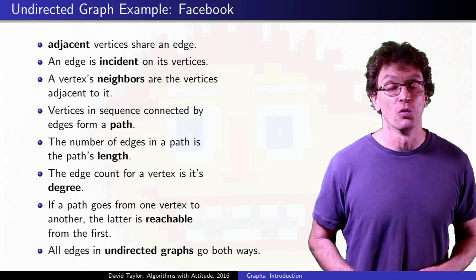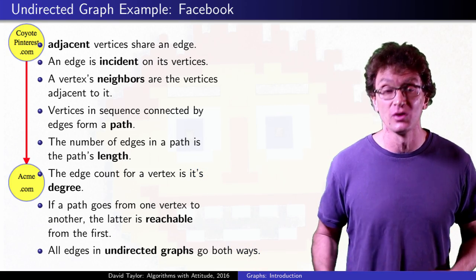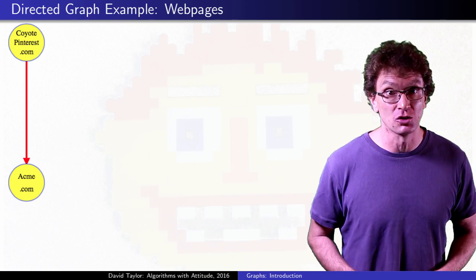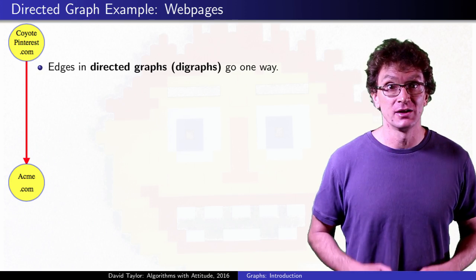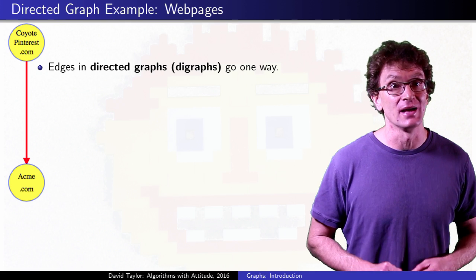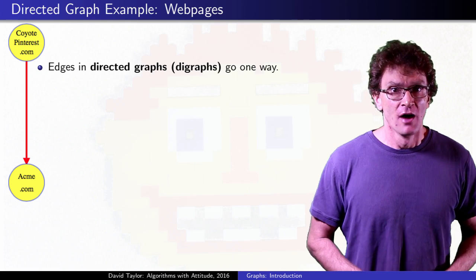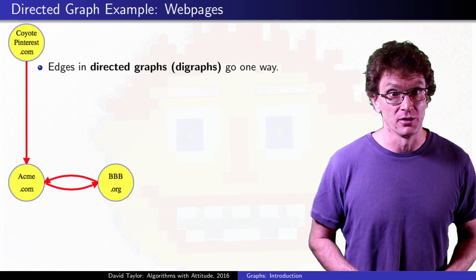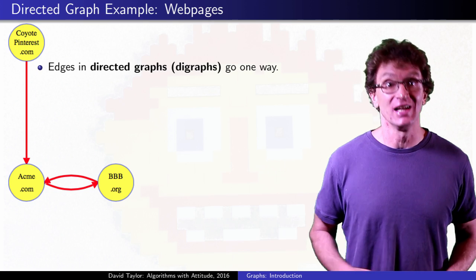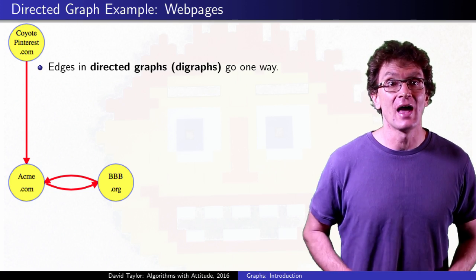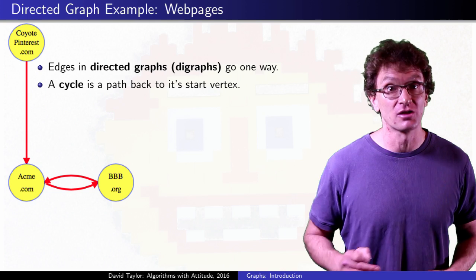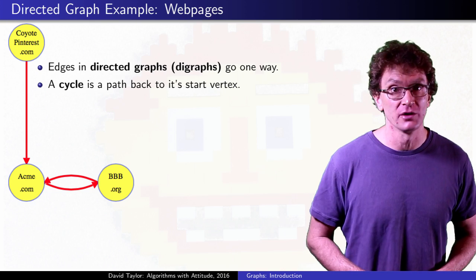Web pages aren't like that. One web page can link to another without being linked back. That's called a directed graph, or digraph. And to draw it, we usually stick an arrow on the edge to show direction. Of course, pages can link to each other, so you can have an edge in each direction between two vertices. That makes a cycle of length 2, a path that ends up where it started.